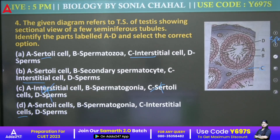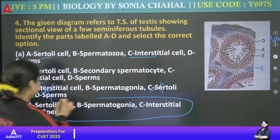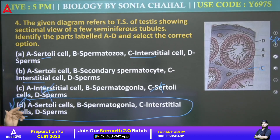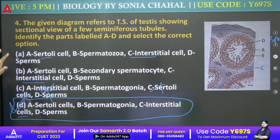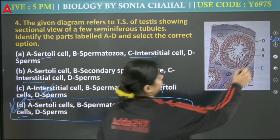So we have our spermatid cell. Our answer is D. It is a little confusing, but no worries.